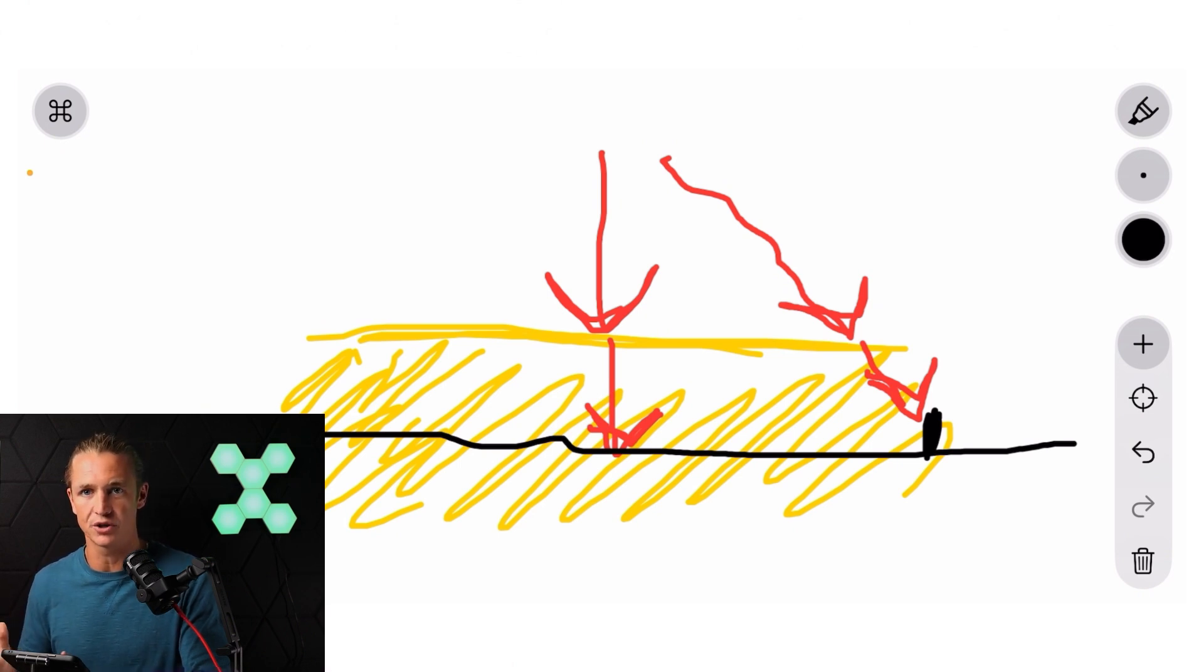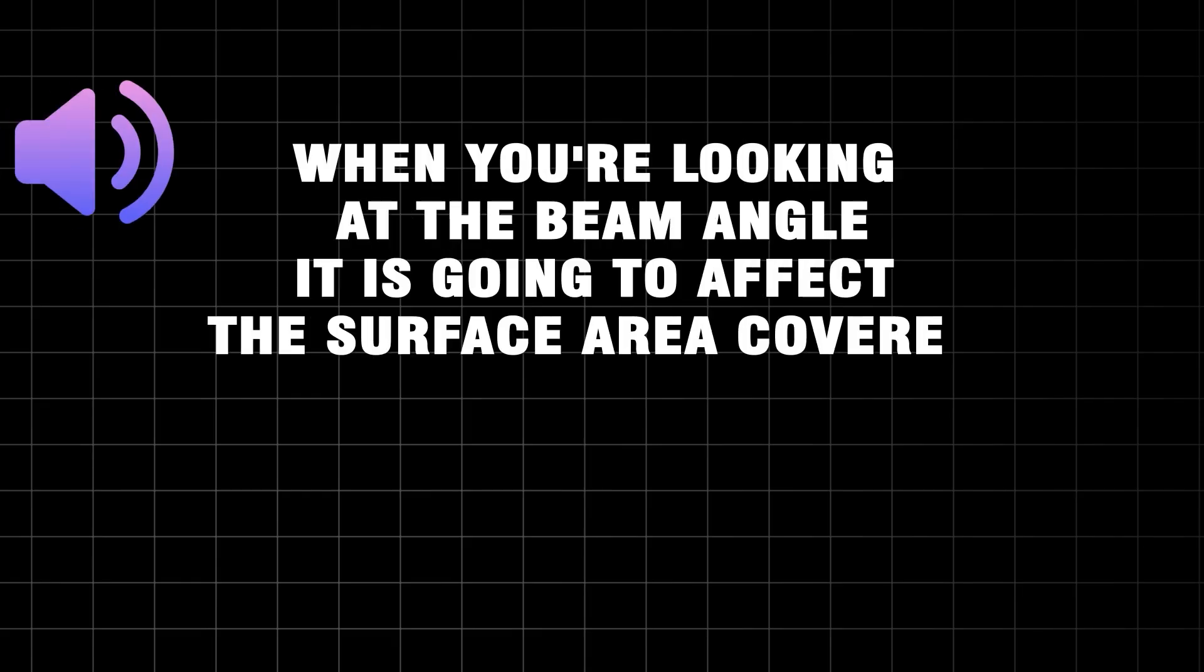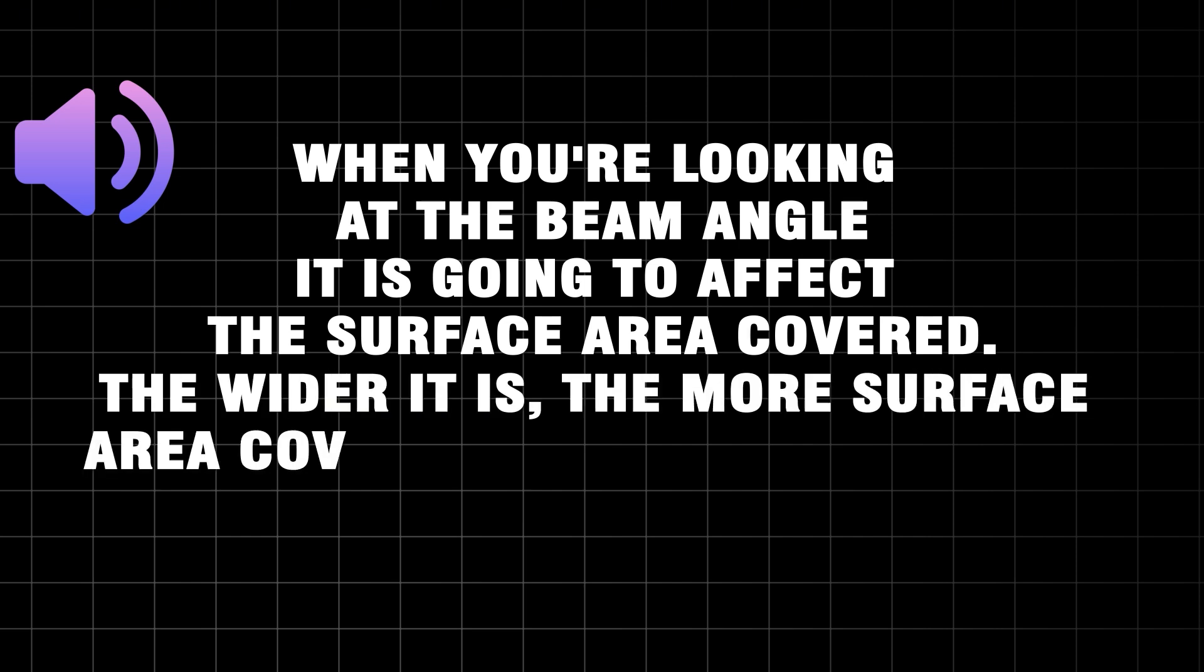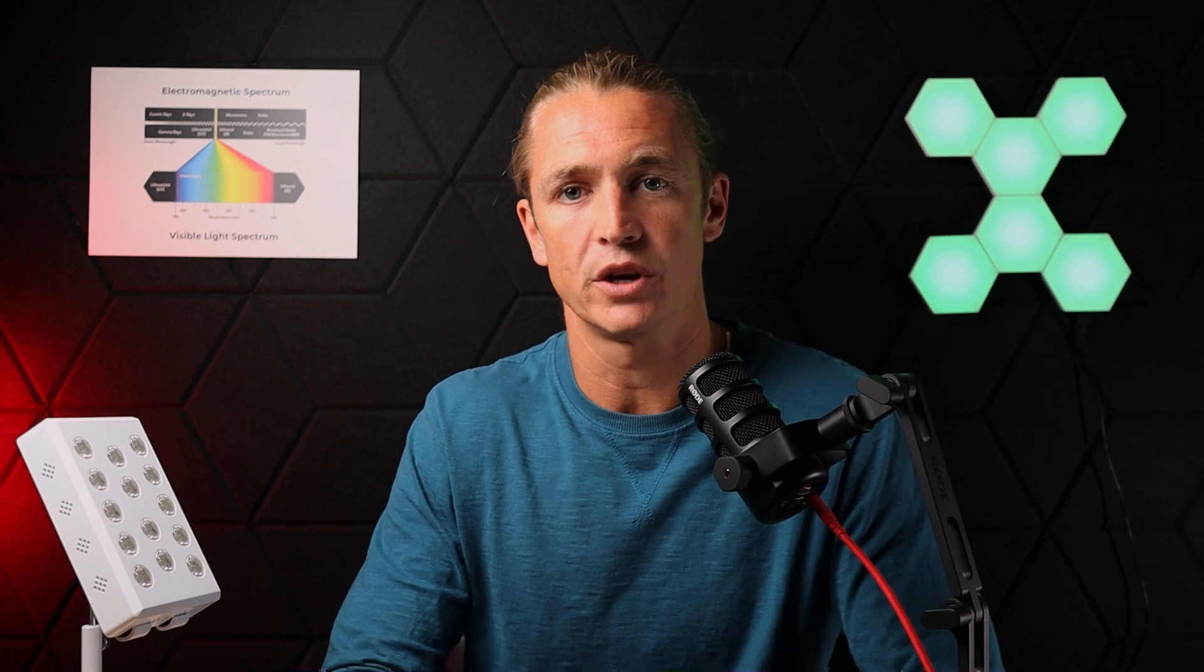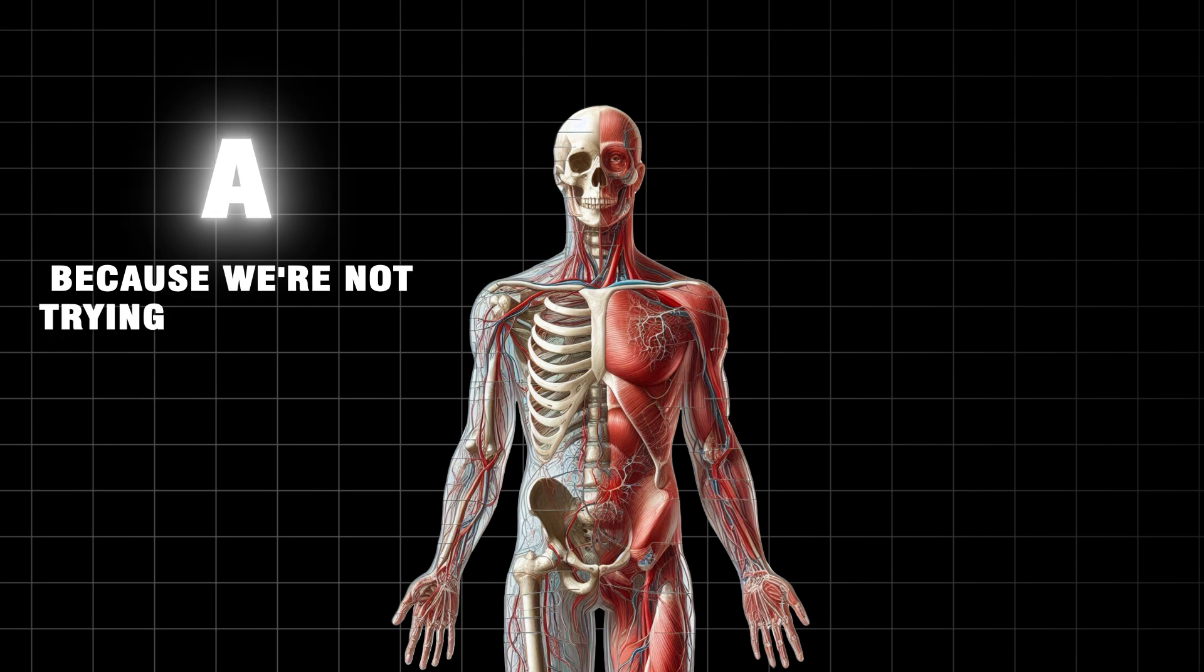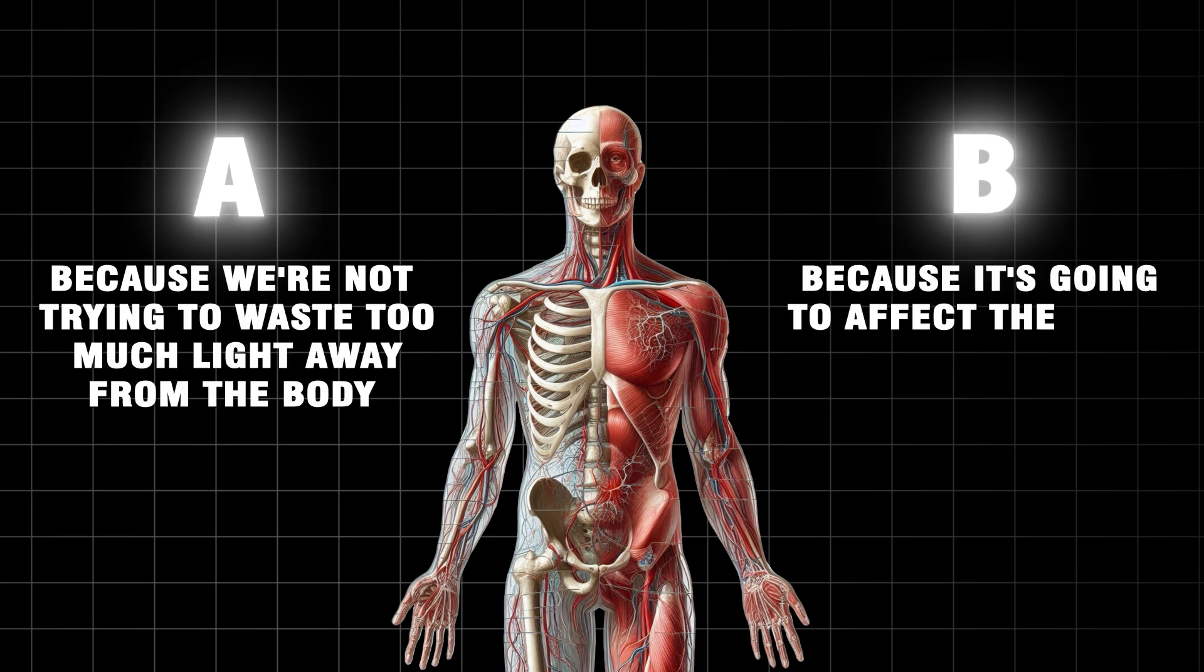So to summarize this really quickly, when you're looking at the beam angle it is going to affect the surface area covered. The wider it is, the more surface area covered. But that also means that the light intensity will drop off. Now when you are targeting a human body it makes a lot more sense to have a narrower beam angle, because we're not trying to waste too much light away from the body, and because it's going to affect the depth of penetration. And the deeper the depth of penetration, obviously the better benefits you're going to get.